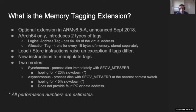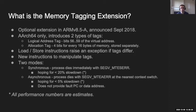The memory tagging extension is an optional extension introduced about two years ago by ARM. It is 64-bit only and introduces two types of tags. There are logical address tags, which reside in the most significant byte of the pointer. And there is an allocation tag, which is RAM metadata — four bits for every 16 bytes of memory. Allocation tags are stored separately, not directly accessible by usual load and store instructions, but there are special instructions to maintain and read these tags.